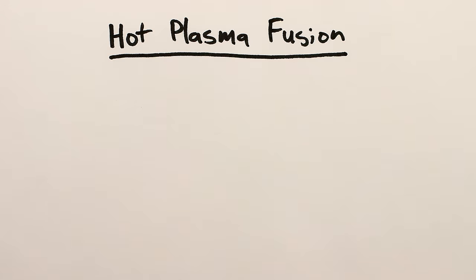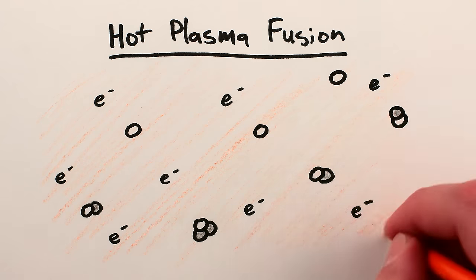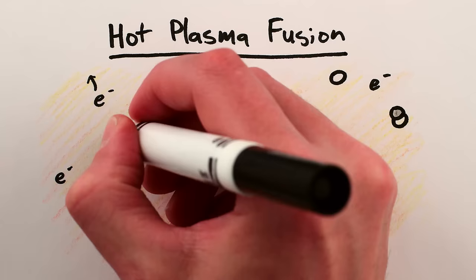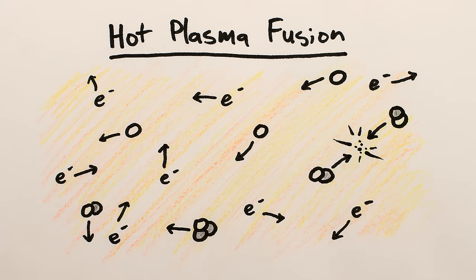This typically happens in a plasma, that is, a super hot soup of electrons and atomic nuclei, where if it's hot enough, every once in a while two nuclei bump hard enough into each other to fuse.